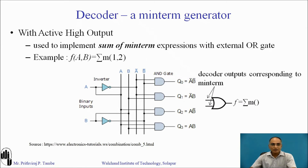This decoder can be used to implement sum of minterms expressions with an external OR gate. Here is one example: a function f(A,B) equals the summation of minterms 1 and 2. To implement this function with the active high output decoder you require an external OR gate. The decoder outputs corresponding to the minterms should be connected to the inputs of this OR gate, and you will achieve the implementation of the sum of minterms expression.